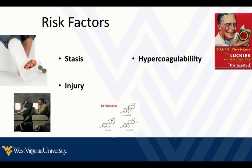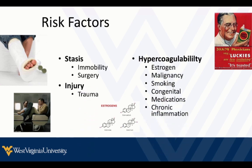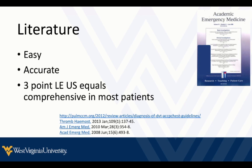Regarding risk factors — stasis, injury, hypercoagulability, estrogens — these are things we should all be familiar with. As for the literature, my summary is that DVT ultrasound is easy and accurate. If you do a thorough three-point lower extremity DVT ultrasound — which I'm going to describe — it may be equivalent to the comprehensive whole-leg DVT ultrasound that is sometimes recommended. There's probably some controversy around that, but there is literature suggesting this is the case, and guidelines that support it.